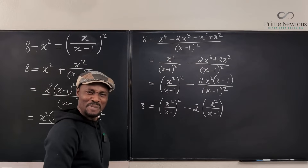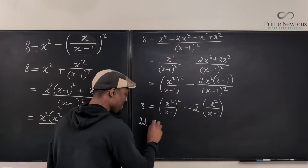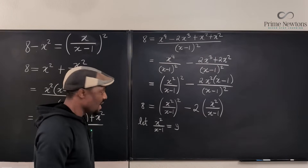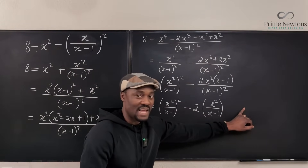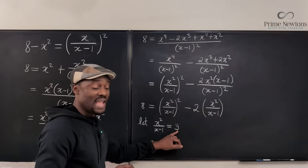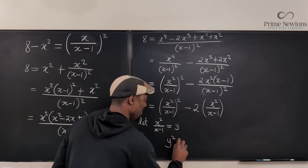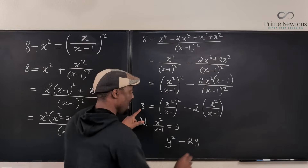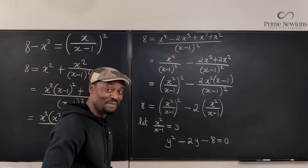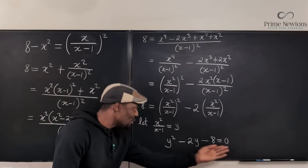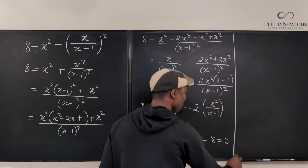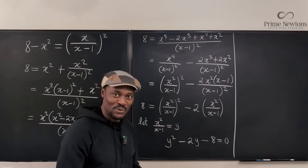Now let's do some magic. Let y equal x squared over (x minus 1). If I move the 8 to this side it becomes minus 8, so everything equals 0. I can write a quadratic equation in terms of y: y squared minus 2y minus 8 equals 0. That is beautiful. Once you get this, it can be factored. It took a while because I was trying to make you see all the steps.